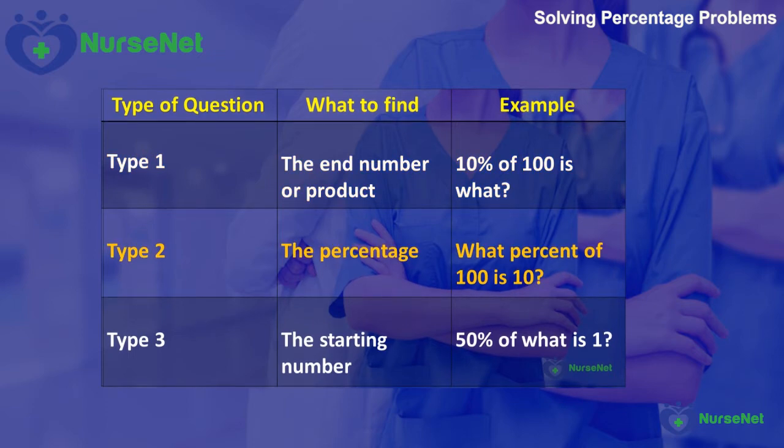Type 2, which is: what is the percentage? For example, what percent of 100 is 10? That's 10%. Type 3 is the starting number. For example, 50% of what is 1? The answer is 2, and 2 is our starting number, since 50% of 2 is 1.